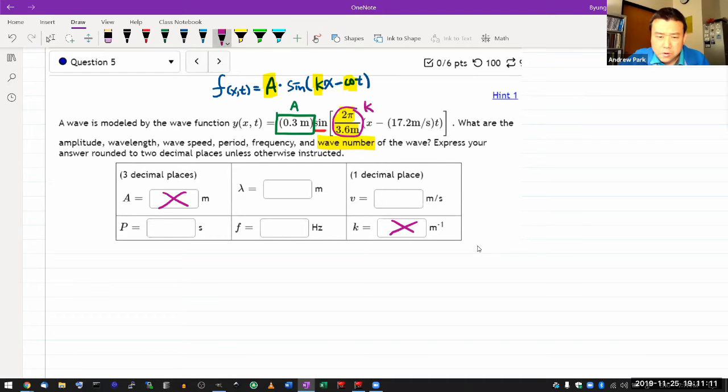I guess you can go either way on which of these you fill in first. You could multiply out this expression here, which would let you find omega, which will let you find frequency, which will then connect to everything else. That's one way.